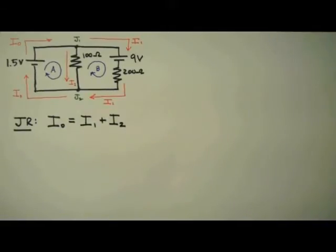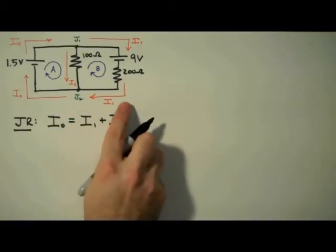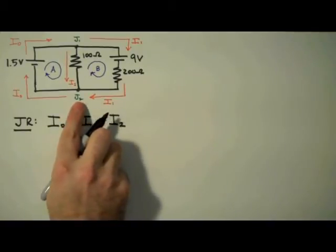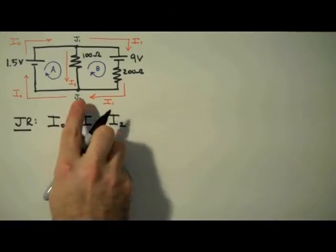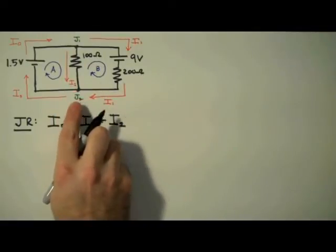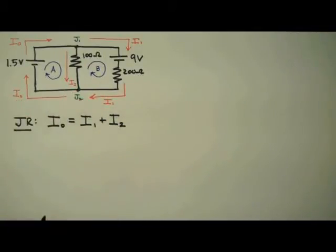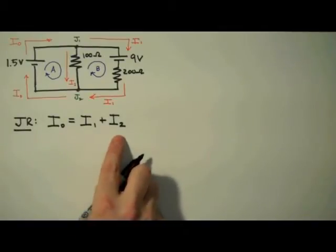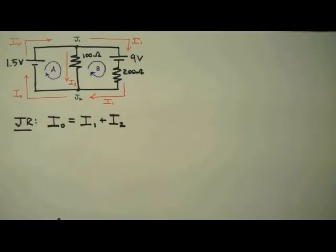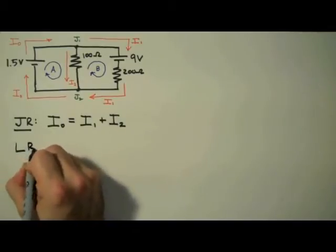If I apply the junction rule to junction 2, we'll have I1 coming in as well as I2 coming in, so on the left hand side it would be I1 plus I2, and we have I0 coming out, so on the right side we have I0. This is exactly what we have already written, so we're not going to use that equation.